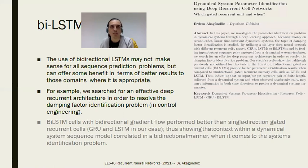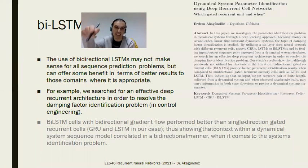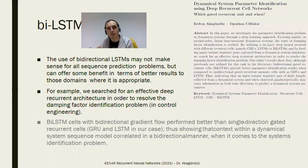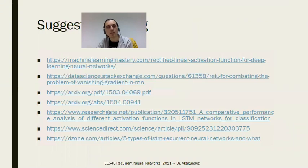BLSTM cells with bidirectional gradient flow perform better than single-direction gated recurrent cells, showing that context within a dynamical system sequence can be modeled in a bidirectional manner when it comes to the systems identification problem. We could empirically confirm this in that paper. These are my suggested readings — please read them.